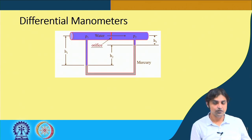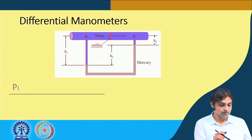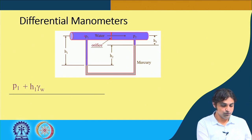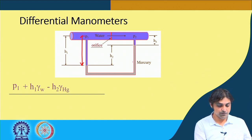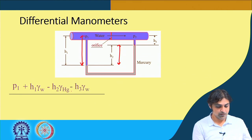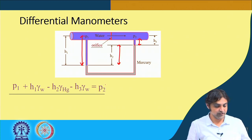If we go down, we add pressure; if we go up, we subtract it. So: P1 plus H1·γw — traversing in this direction through water — minus H2·γHg — because we traverse through mercury — minus H3·γw equals P2. Very simple equation.